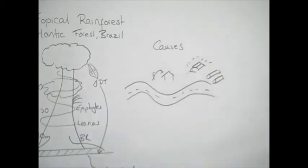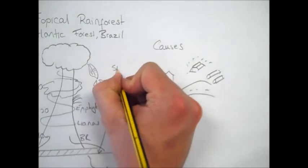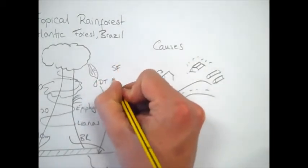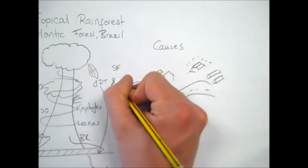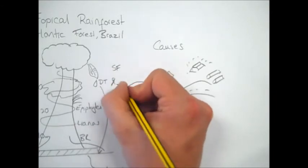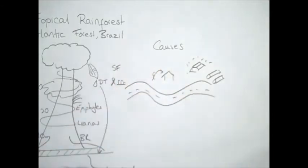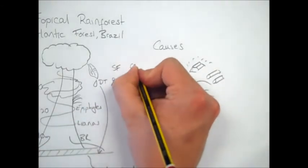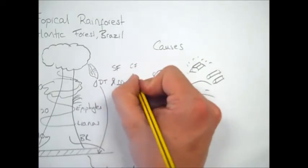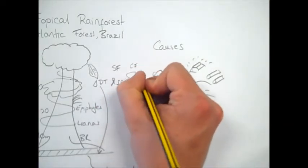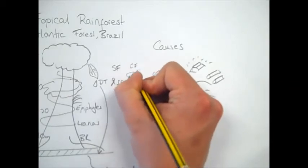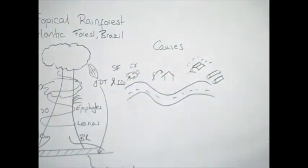We also see things such as subsistence farming, where people just grow small plots of land to provide them with enough crops to feed their family. But we're also starting to see commercial farming. And as I've said in other diagrams, I hate drawing cows, but cattle ranching is a really big cause of deforestation.